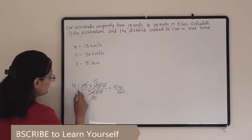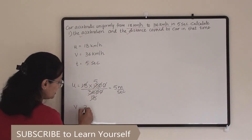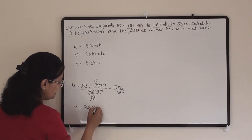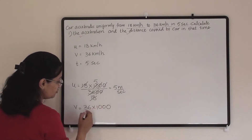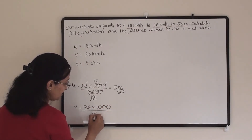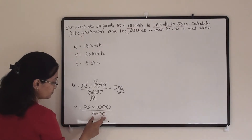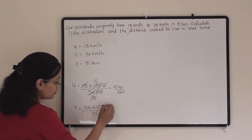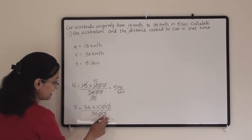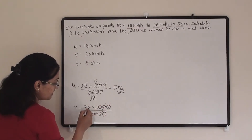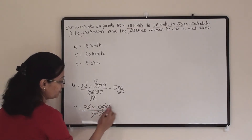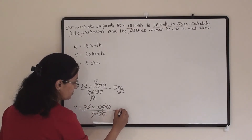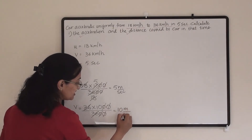Now v, the final velocity, is 36 km/h. So 36 multiplied by 1000 to convert to meters, divided by 3600 to convert to seconds. Cancelling the zeros and 36 with 36, the answer is 10 meter per second. So our final velocity v = 10 m/s.